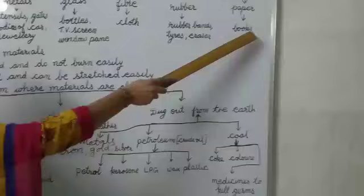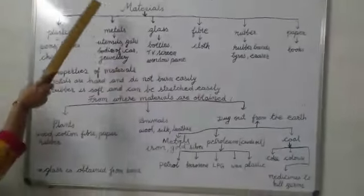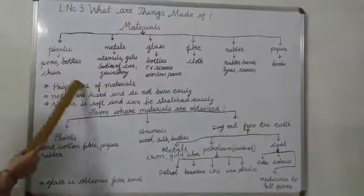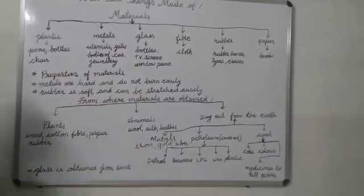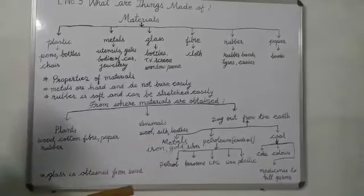Paper. Paper is used to make books. As you see these materials and the things, you will find that all these materials have special properties.